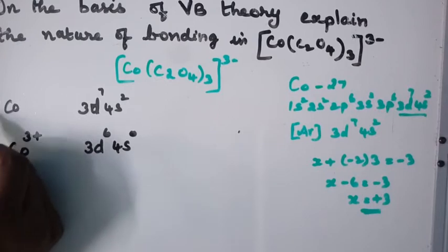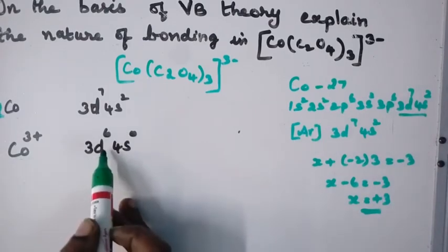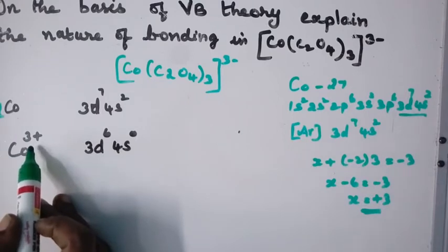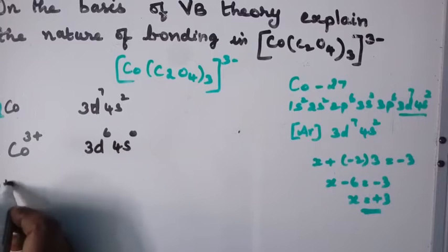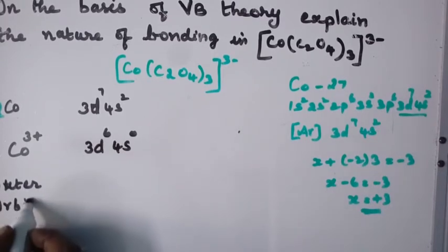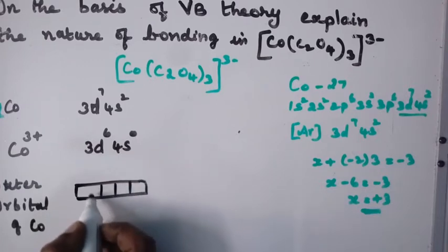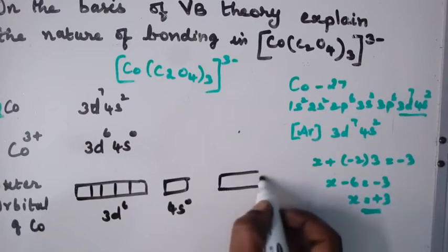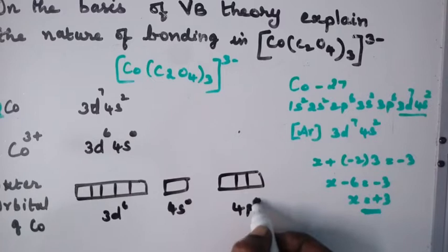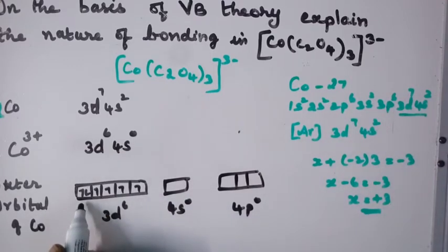In the ground state cobalt has 3d⁷ 4s², but in the +3 oxidation state it has lost 3 electrons, giving 3d⁶ 4s⁰. Looking at the outer orbitals of Co³⁺, the electron distribution is: 3d⁶, 4s⁰, and 4p⁰. The electrons are distributed with all six d-electrons present and the 4s and 4p orbitals vacant.